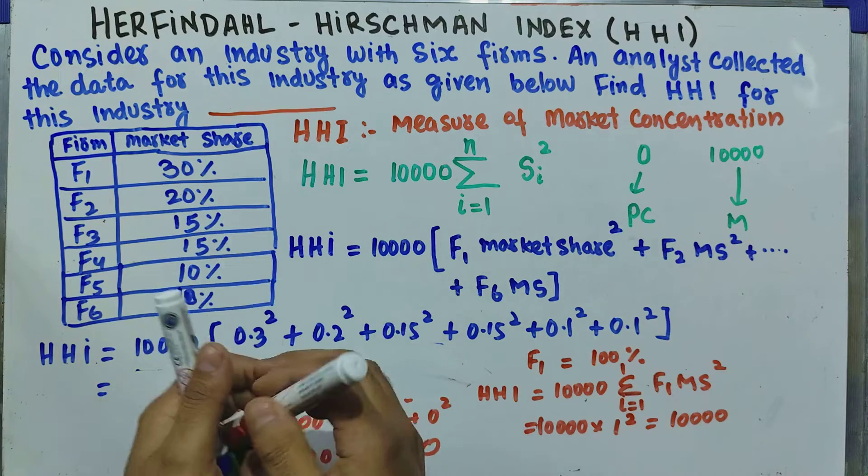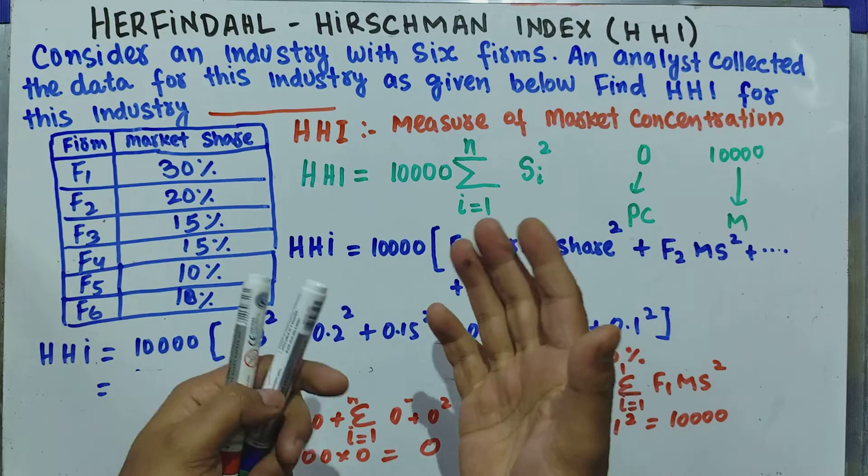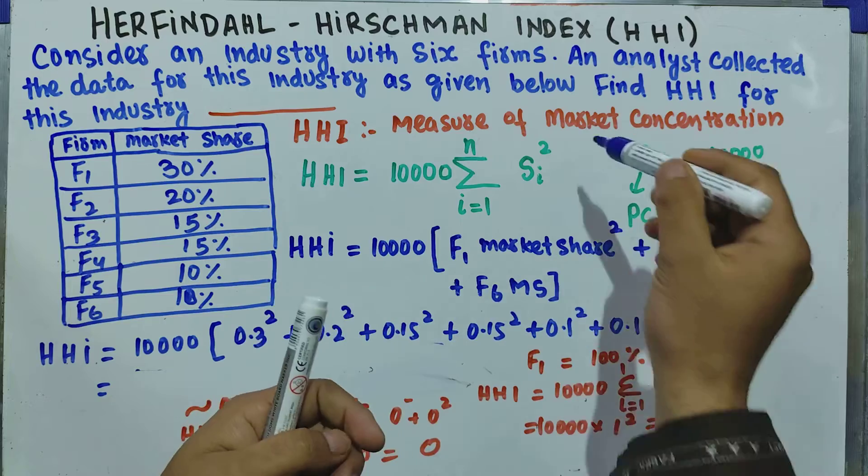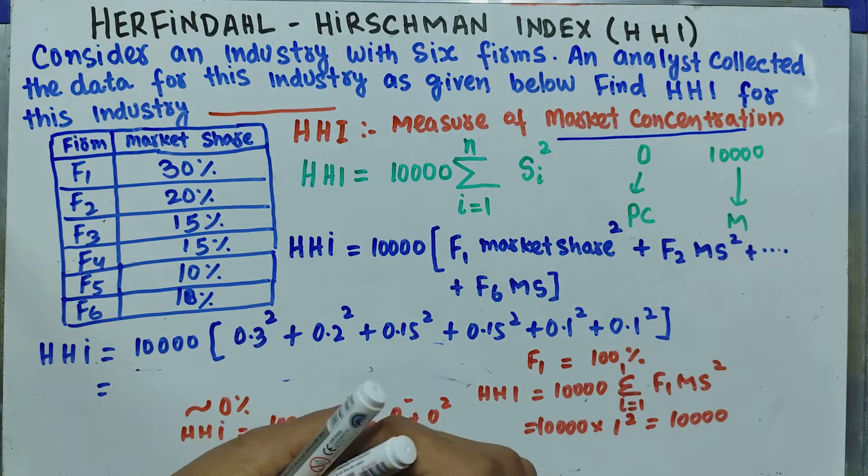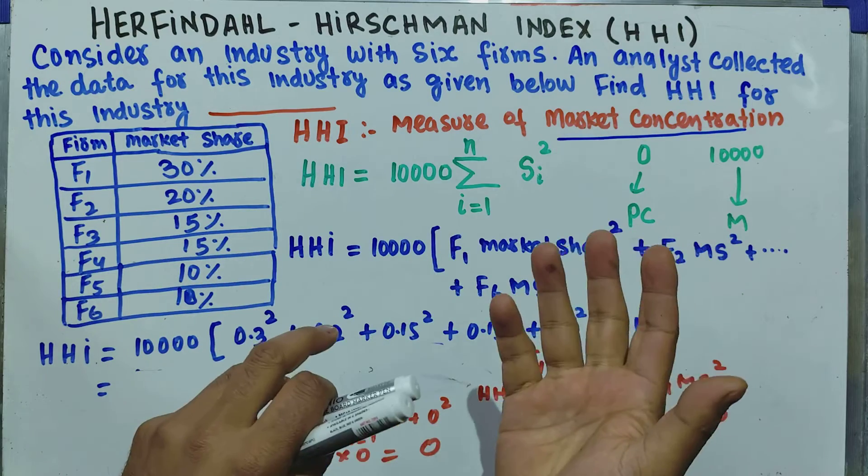We have to calculate the HHI. The Herfindahl-Hirschman Index is used to measure market concentration. Market concentration measures the extent of domination of market share by one or more firms.